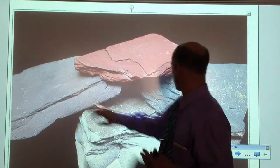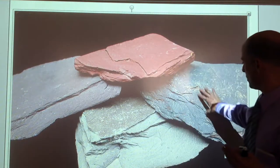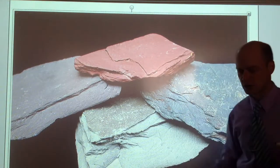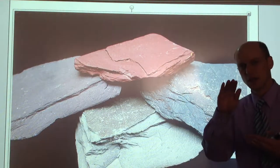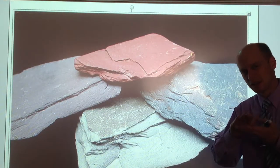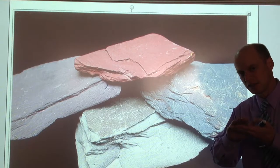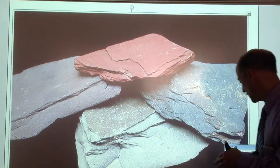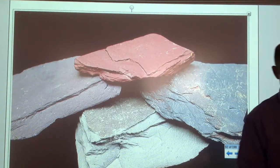It looks to be a little purplish slate, maybe a bluish. The colors don't always come through well, but slate has these layers of the minerals all kind of in the same direction, which we'll talk about.